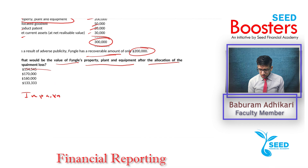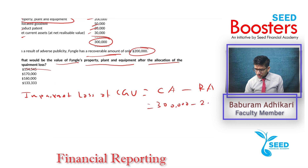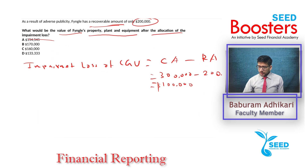Let's calculate the impairment loss of the CGU first. To calculate the impairment loss we compare the carrying amount with the recoverable amount. Carrying amount is 300,000 and recoverable amount is 200,000. Since the carrying amount is higher than the recoverable amount, this results in an impairment loss of 100,000.